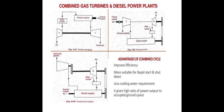Here we get two power outputs: one from the diesel engine and the second from the gas turbine. The main advantages of the combined cycle are improved efficiency, more suitability for rapid start and shutdown, less cooling water requirement, and a high ratio of power output to occupied ground space.